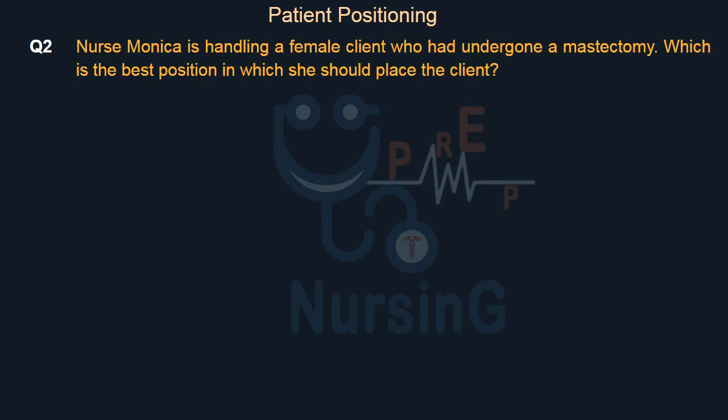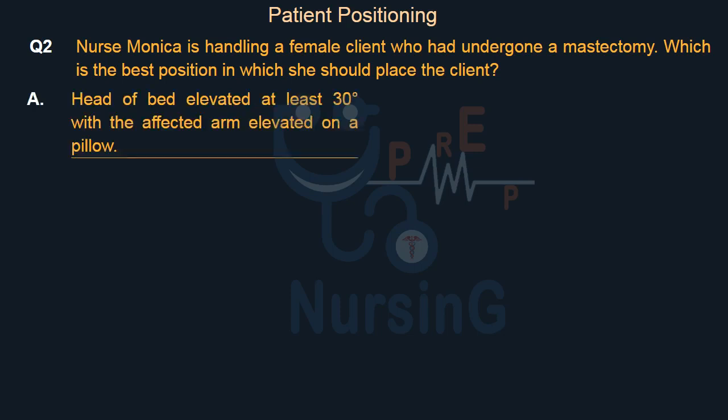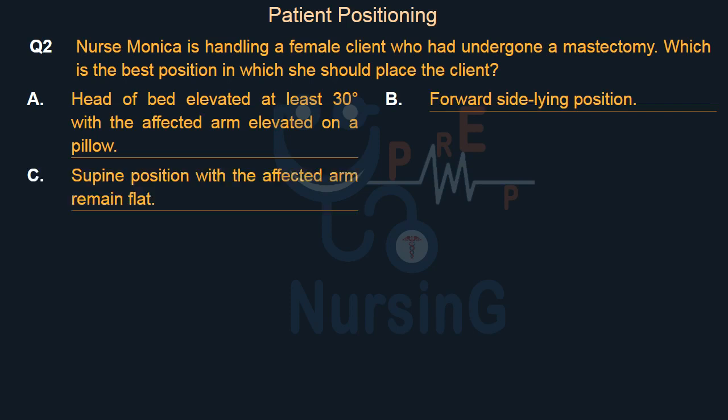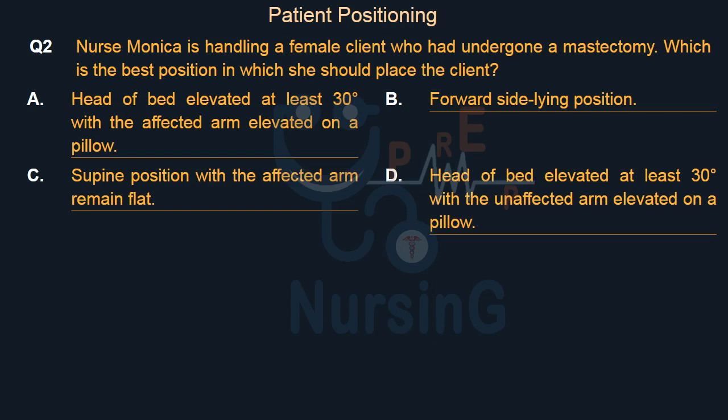Nurse Monica is handling a female client who had undergone a mastectomy. Which is the best position in which she should place the client? Option A, head of bed elevated at least 30 degrees with the affected arm elevated on a pillow; Option B, forward side lying position; Option C, supine position with the affected arm remaining flat; Option D, head of bed elevated at least 30 degrees with the unaffected arm elevated on a pillow.